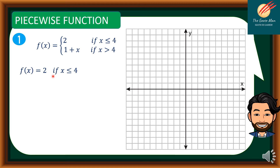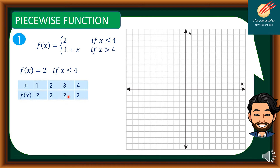Starting with f(x) = 2 if x ≤ 4: if x = 1, f(x) = 2; if x = 2, f(x) = 2; if x = 3, f(x) = 2; if x = 4, f(x) = 2. This is a constant function. The graph extends from negative infinity up to and including x = 4.